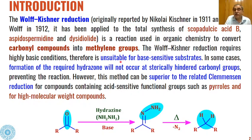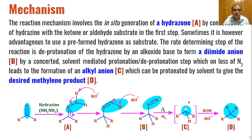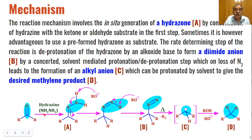However, Wolf-Kishner reduction requires highly basic conditions, so the disadvantage is that it is unsuitable for base-sensitive substrates. The basic mechanism is that in the first step, aldehydes or ketones react with hydrazine to give the corresponding hydrazone derivatives.